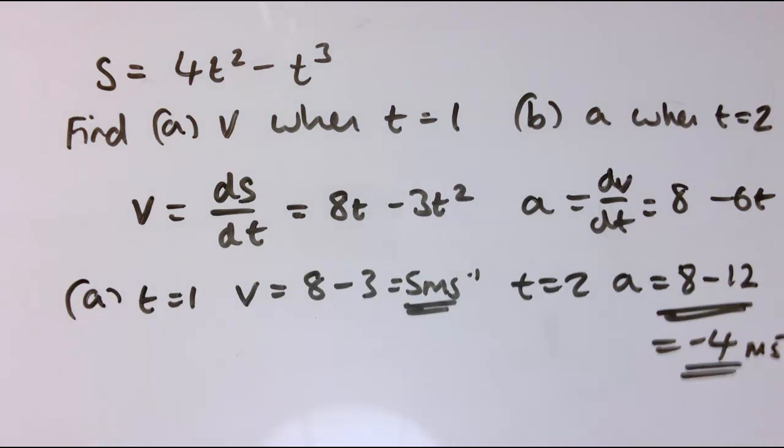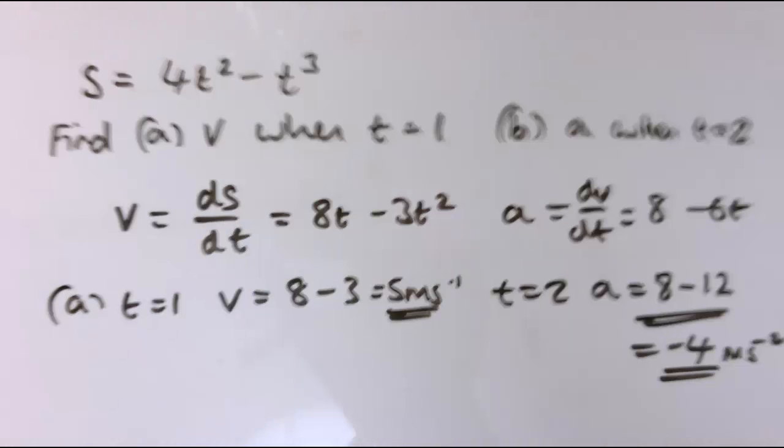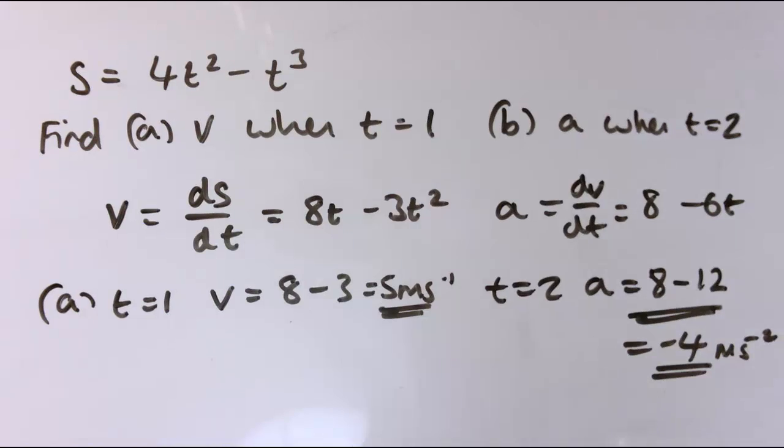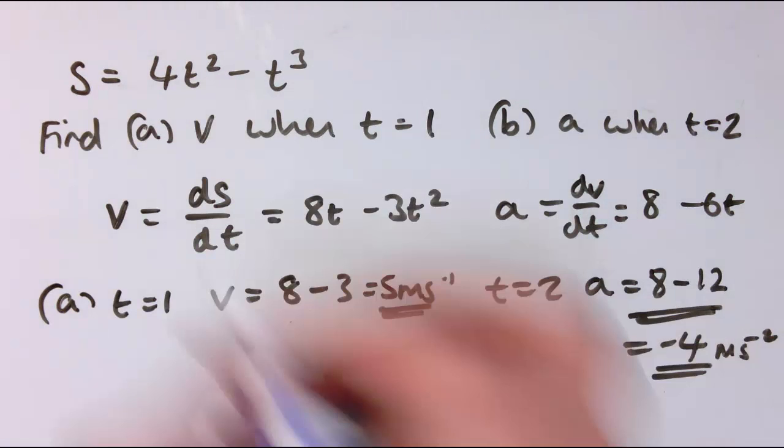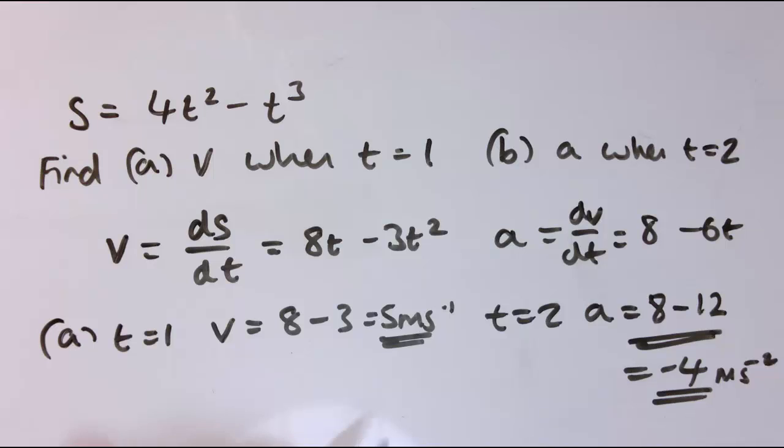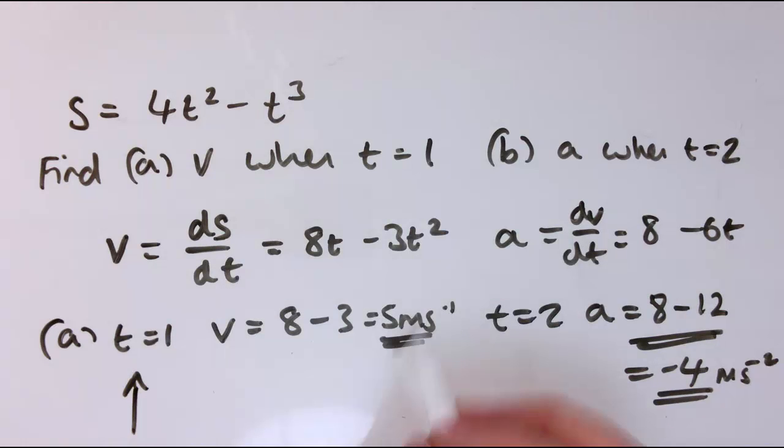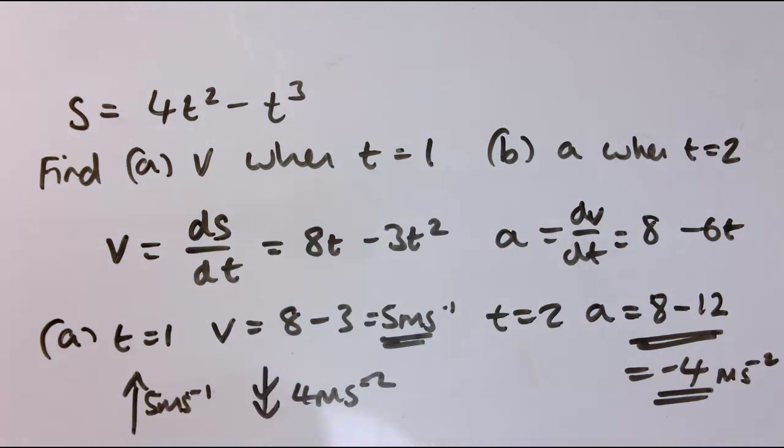Again, remember the directions of all of these are important. So I've got here a positive velocity for the first one. So this needs to be interpreted in some sort of context, but I guess maybe this is just moving up and down. Probably might take up to be the positive direction. So that means here I'd have 5 meters per second upwards, but here I'd have an acceleration of 4 meters per second squared downwards, or a deceleration upwards of 4 meters per second squared.